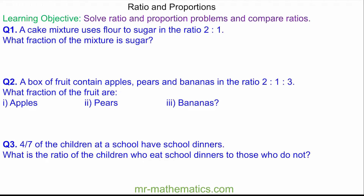Here we have 3 questions to recap our learning. In question 1, a cake mixture uses flour to sugar in the ratio 2 to 1. What fraction of the mixture is sugar? We have 3 parts in our ratio and 1 part is sugar, so we have 1 third.